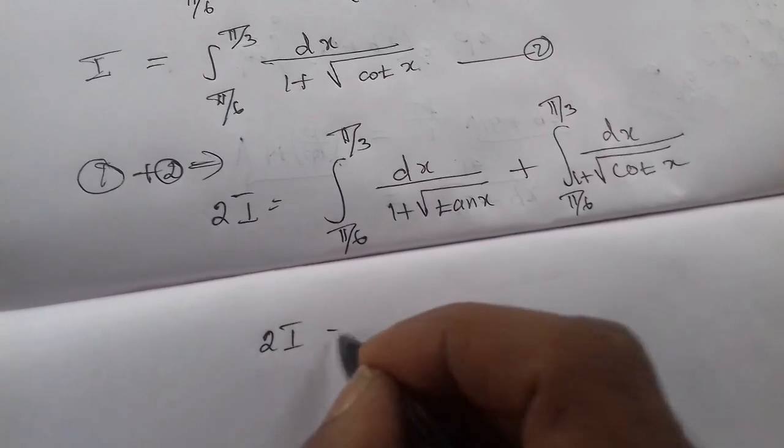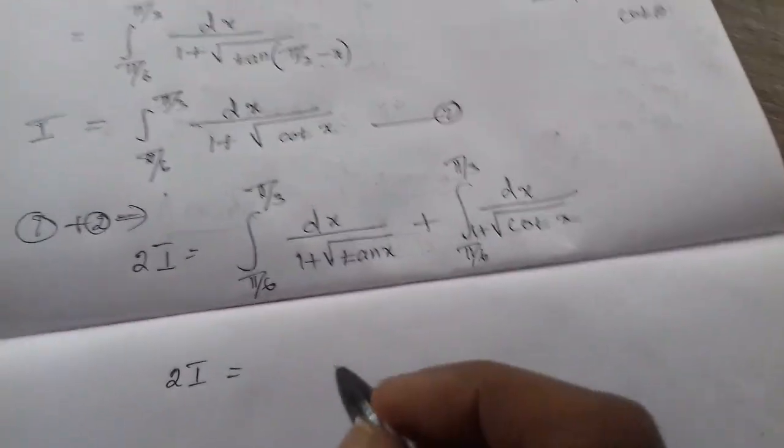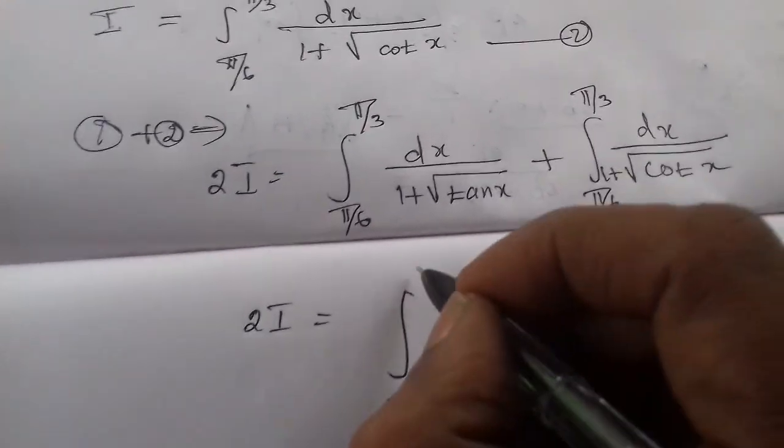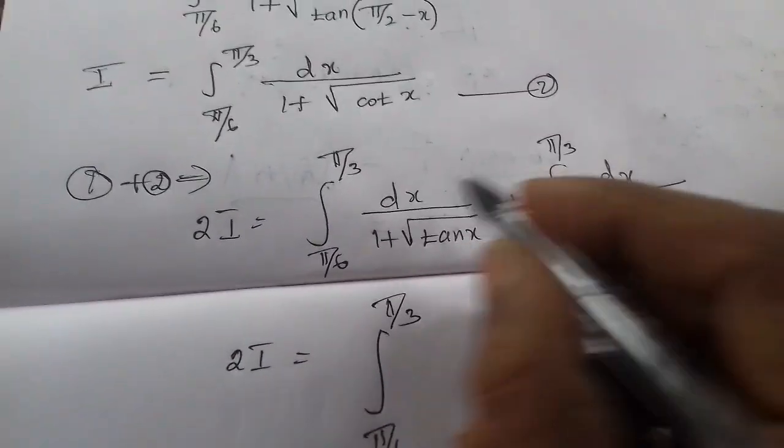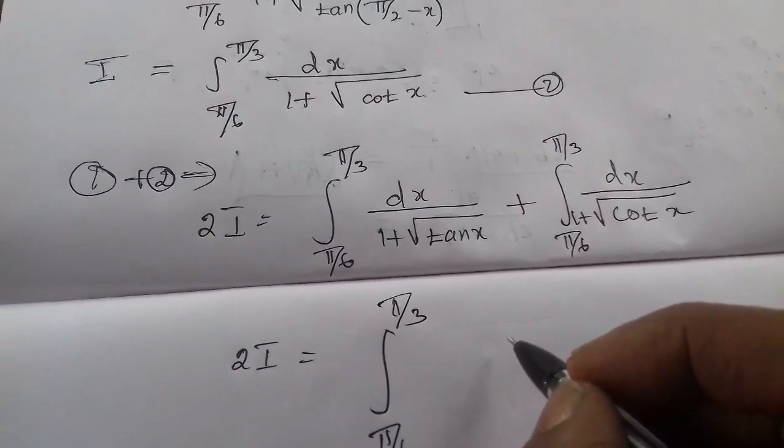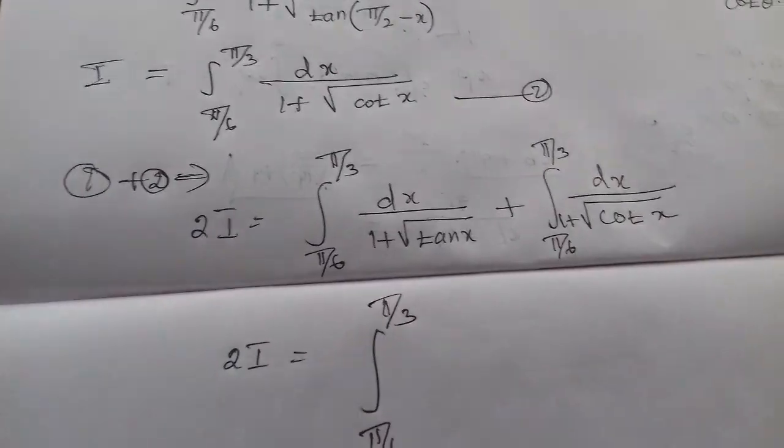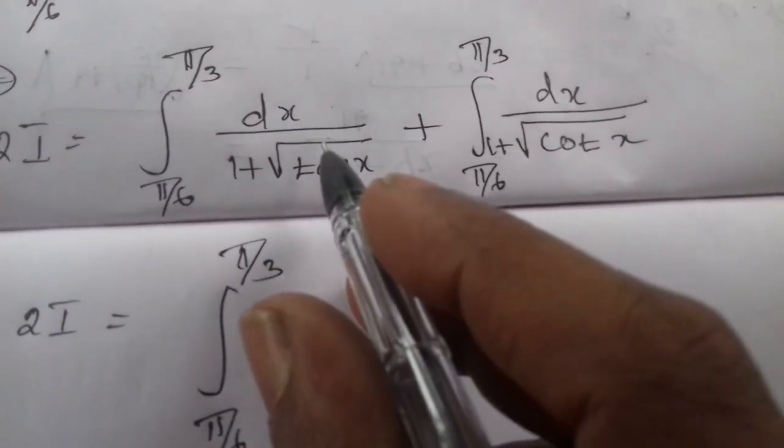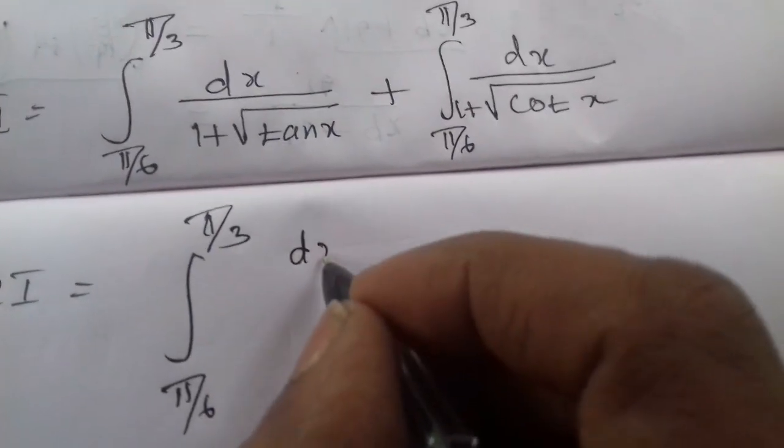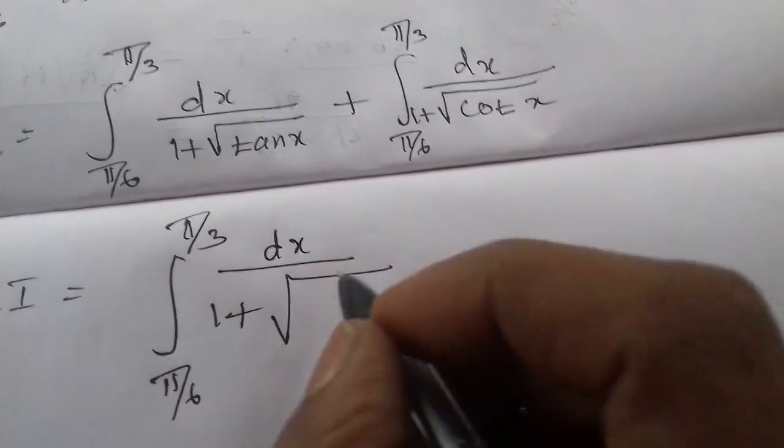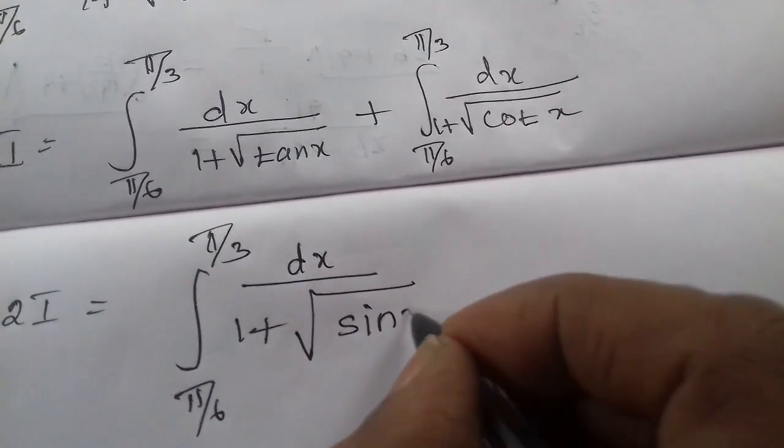2I equals common - in the concept, the limits π/6 to π/3, wherever dx.